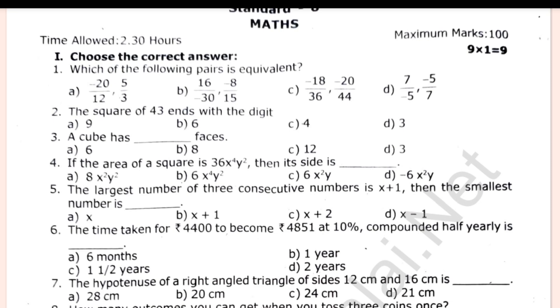Which of the following pairs is equivalent? The square of 43 ends with the digit. The cube has dash faces. What is the 11th Fibonacci number?